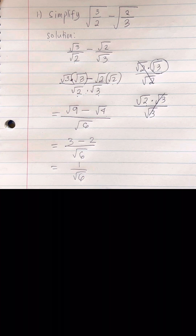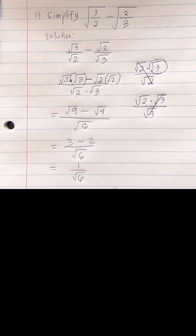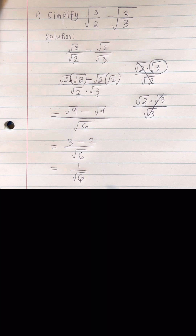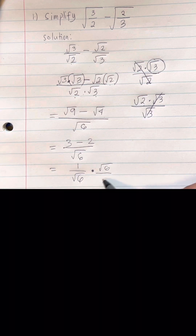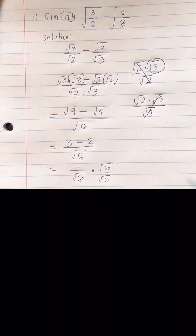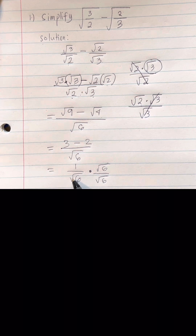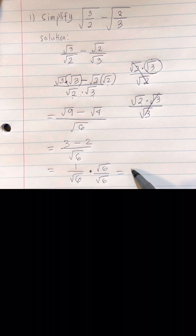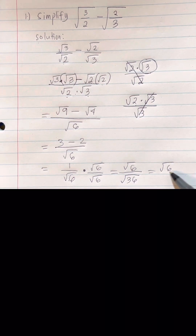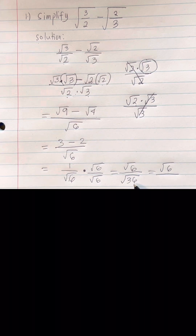Now, 1 over square root of 6 is not yet in simplified form, so we need to rationalize our denominator. When we rationalize, we remove the radical symbol from the denominator. To do that, we multiply by a number equal to 1 — that is square root of 6 over square root of 6. This gives us square root of 6 over square root of 36, which simplifies to square root of 6 over 6.